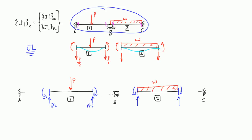Looking at the joints, they have equal and opposite moments and shears. The shear going up on the element means the shear is going down on the joint. A clockwise moment on the element means a counterclockwise moment acts on the joint. On the other side, a counterclockwise moment on the element means a clockwise moment on the joint, and a shear going up means the shear on the joint goes down — equal and opposite. This causes a reaction at joint B to go up. Similarly at joint C, a reaction goes up and then down, with clockwise and counterclockwise moments acting accordingly.